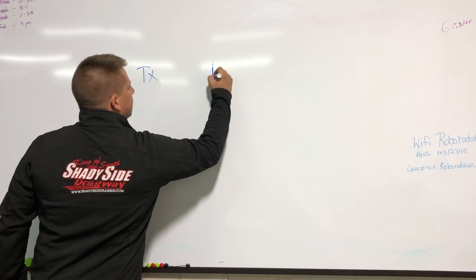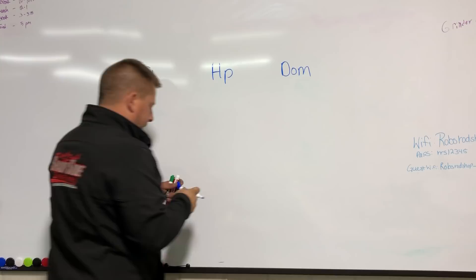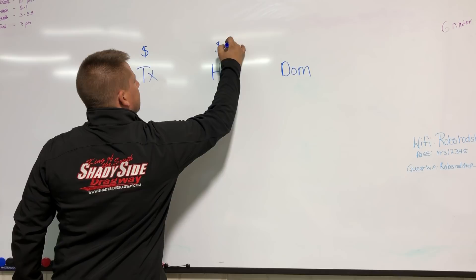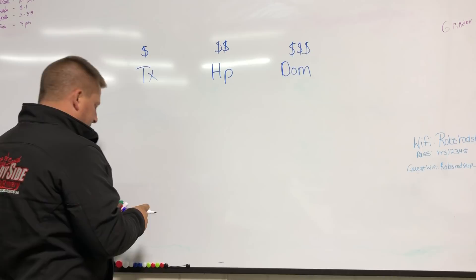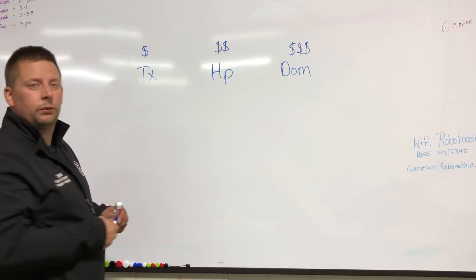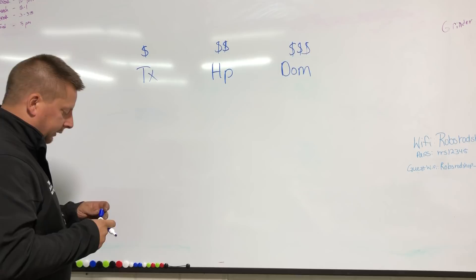The three systems that we have is going to be the Terminator X, the Holley HP, and the Dominator unit. Now, respectively, this one is the least expensive, this one is kind of middle-of-the-road expensive, and this one is the most expensive. However, this of course comes with a lot more options than either one of these do, and all three are really good when used in the right application for what they were intended for.